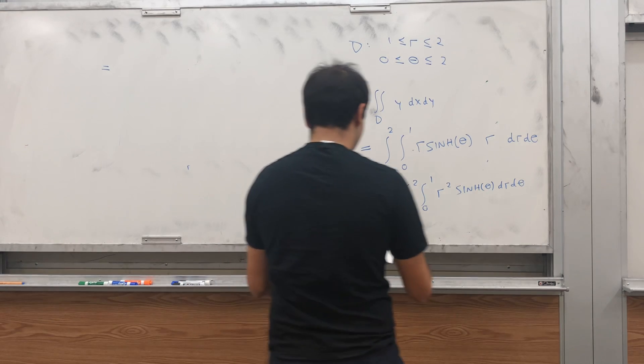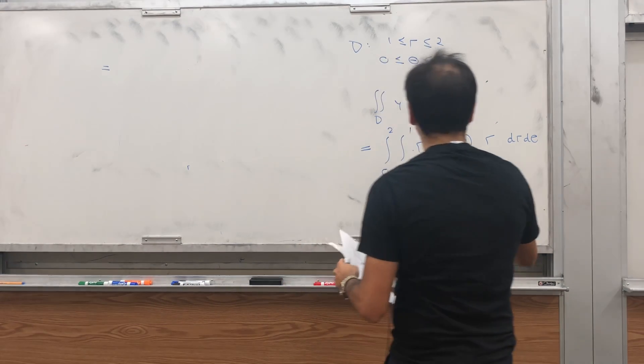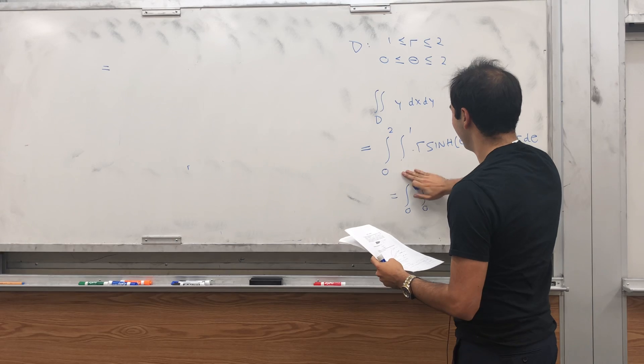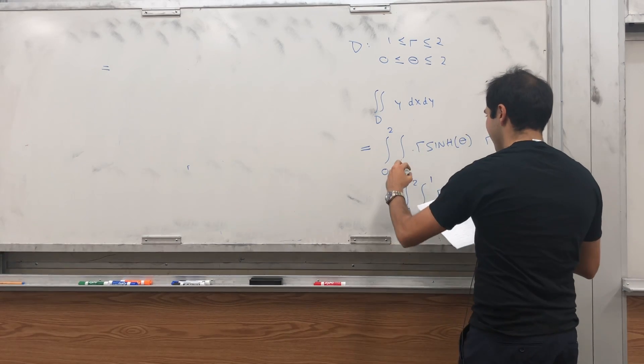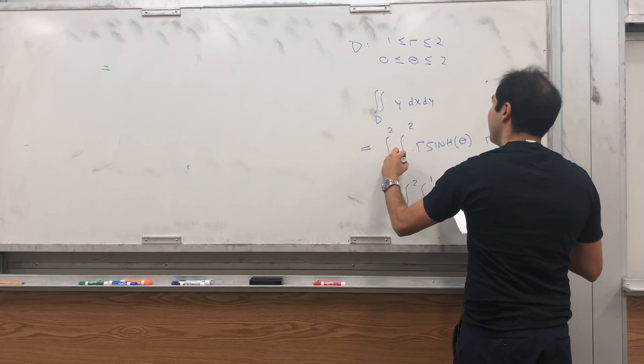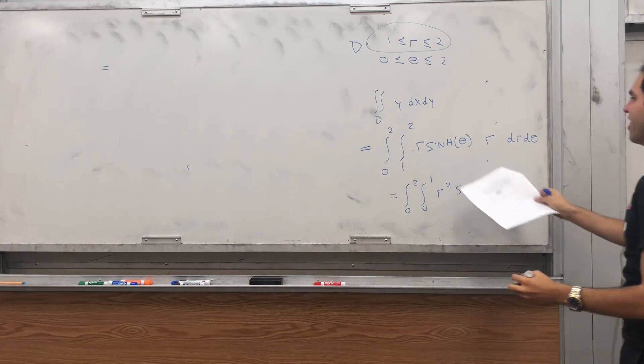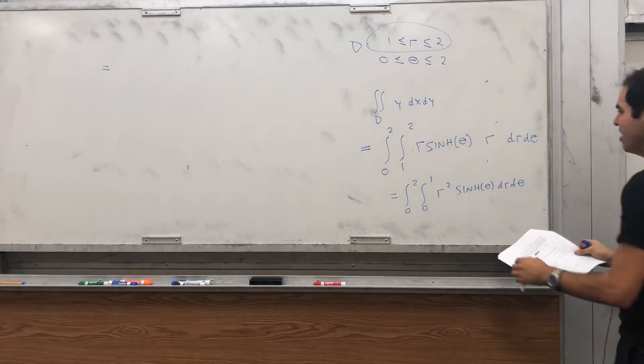Ah, one second. Oh, I think I mixed up something. So, no, r, sorry. It's not from 0 to 1. It's from 1 to 2. Because look, we have this thing r is from 1 to 2 and then theta is from 0 to 2 and we get that.